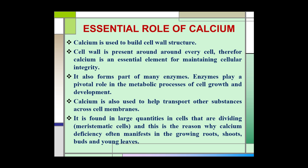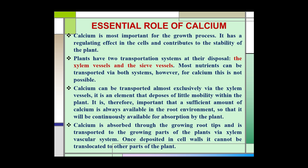It is found in large quantities in meristematic cells — cells that are dividing. This is the reason why calcium deficiency first appears in the growing roots, shoots, buds, and young leaves. Calcium is most important for the growth process and has a regulating effect in cells, contributing to the stability of the plant.